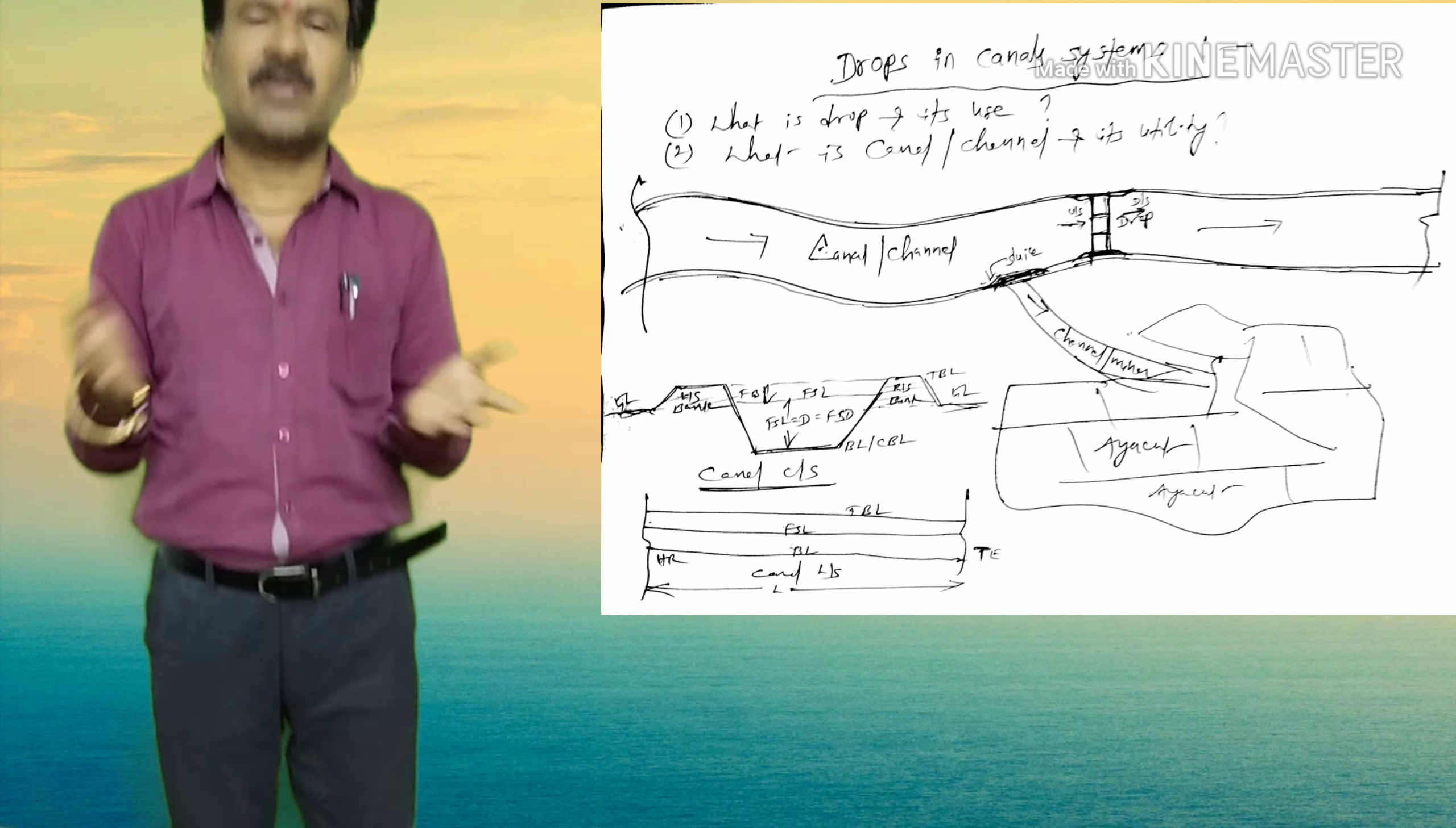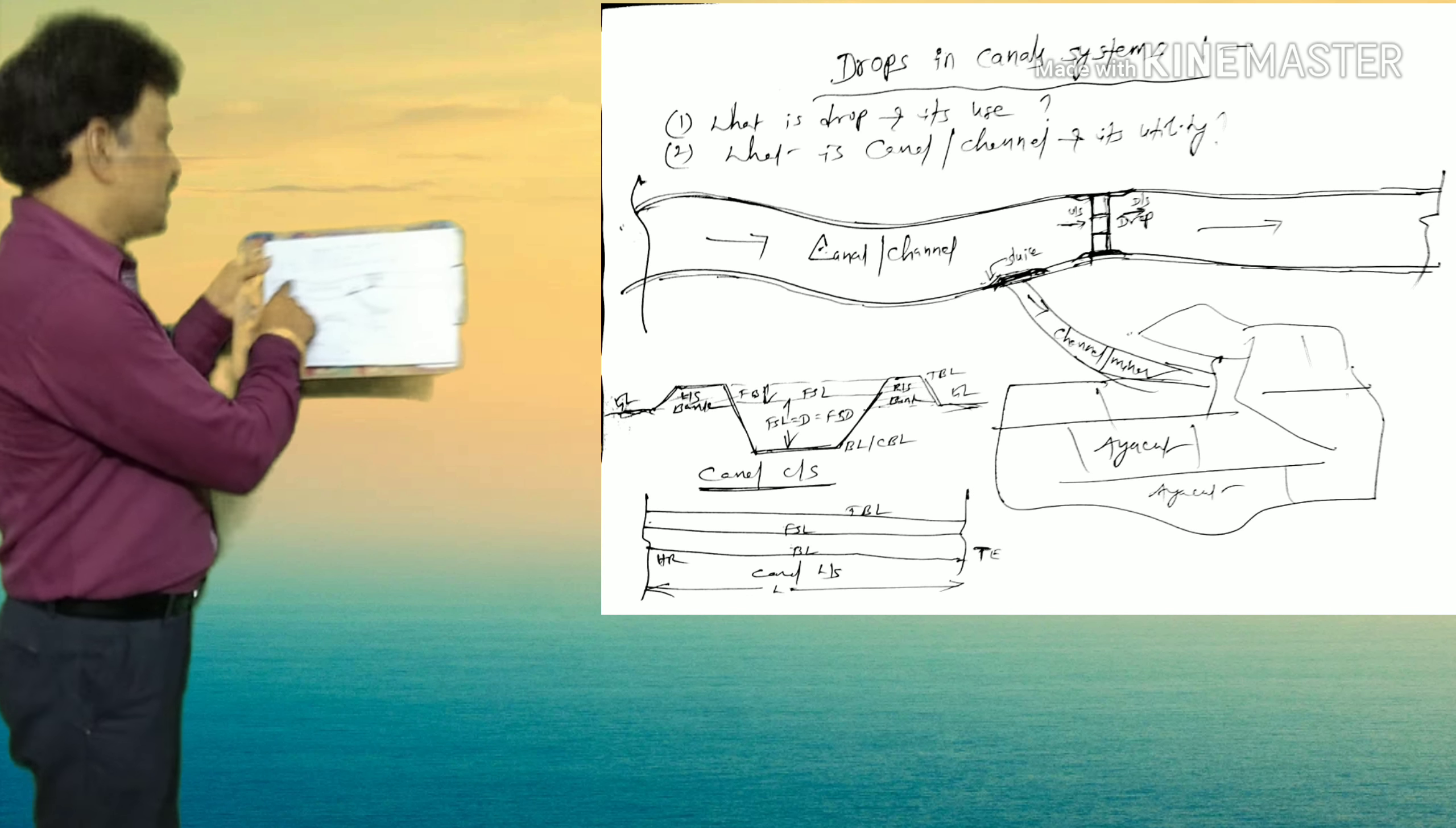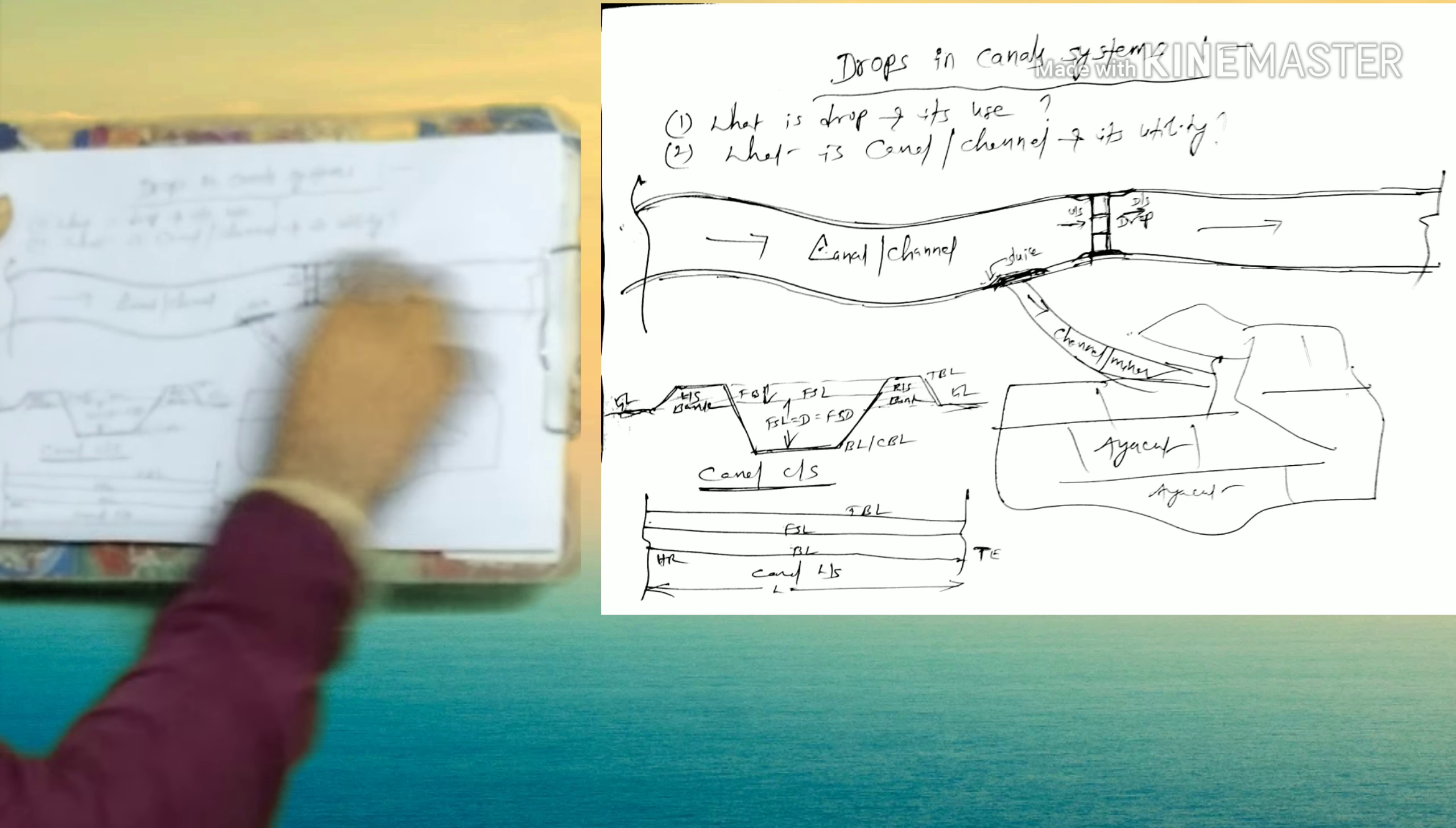This is without shutter, openings may be of rectangle, trapezium, or triangular. And here, the difference between this canal and channel, this is of small size, and this is of major size.